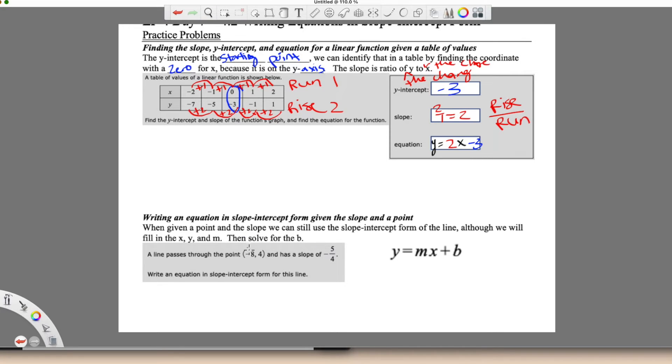So remember this is x, this is y, this is m. So it's a line passing through this point and it has a slope of negative five-fourths. So we have a lot of information here. What we're missing is the y-intercept. I need the y-intercept to write that equation.